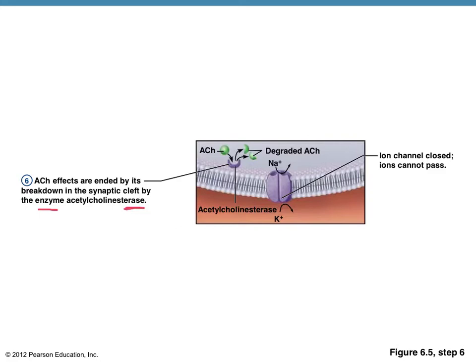Once the ACH has done its job, it's broken down by a specific enzyme — acetylcholinesterase. You see the -ase at the end, you know it's an enzyme, and it's just broken down. Just know that if the ACH were to stay in that receptor site, you could have continued muscle contraction, and there are some disorders caused by that very physical process.